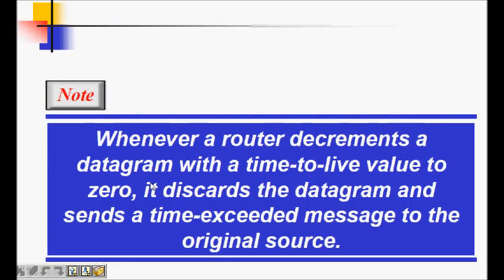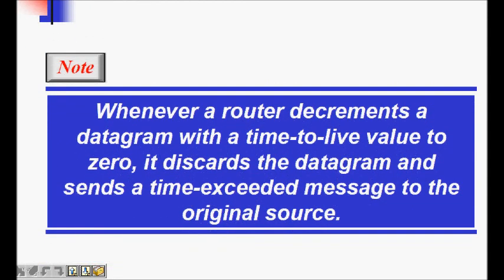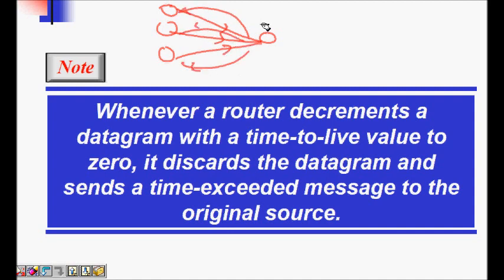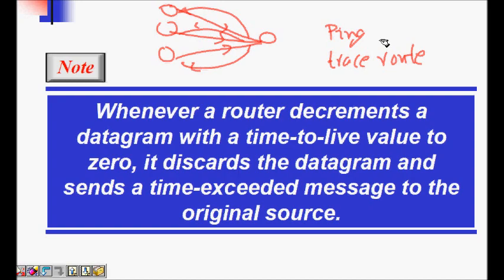One source quench message is sent for each discarded datagram. If multiple senders are all pumping packets at a high rate to a router or receiver that cannot handle it, the receiver will send source quench messages to all of them, reducing congestion. In the next lecture we will look at time exceeded and other problems, and in the final ICMP lecture we will see how ping and traceroute are handled using ICMP.